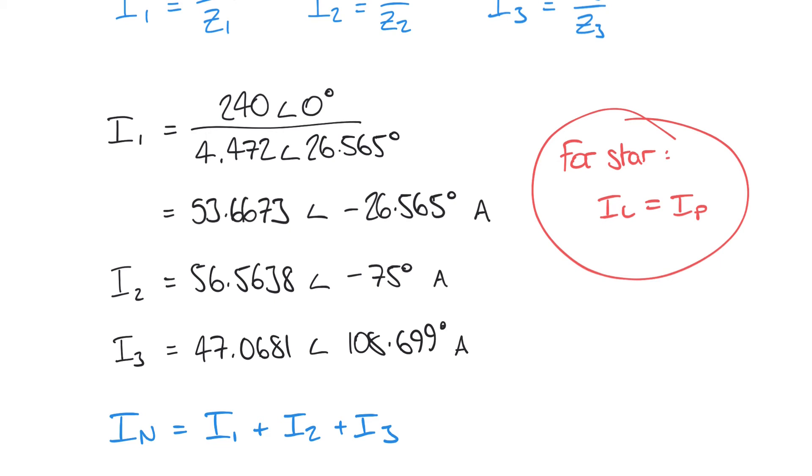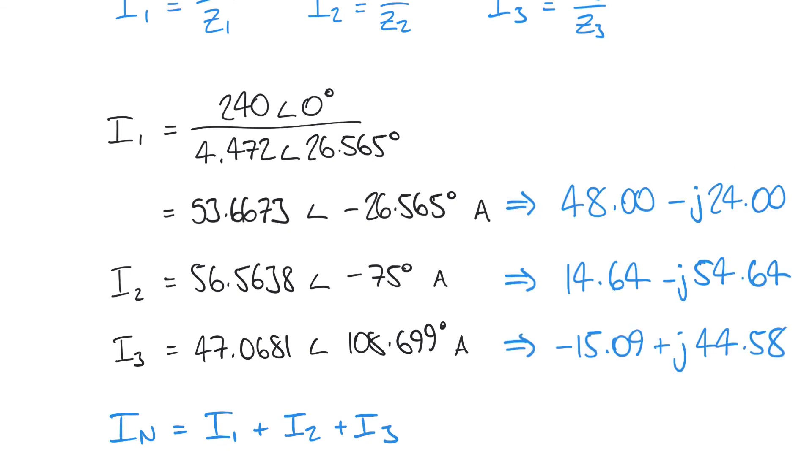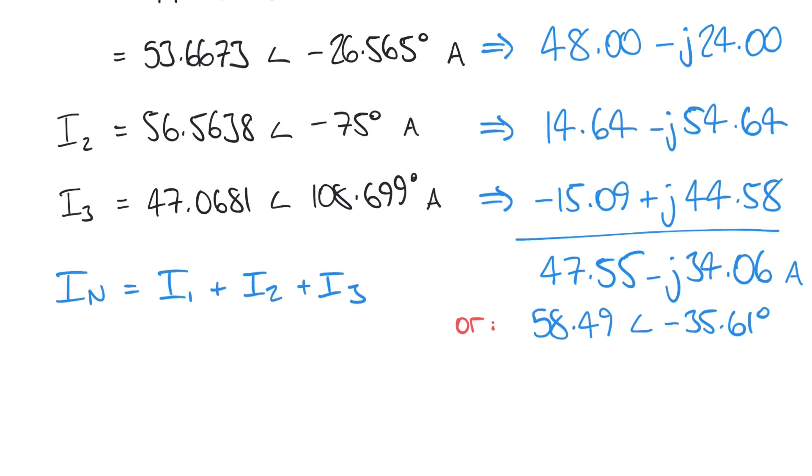What we'll do is convert these back just using the rec function on a scientific calculator to rectangular form. We have i1, i2 and i3 in rectangular form, and when we add those together we get a total neutral current that is not zero, as was the case in a balanced network. In this unbalanced network we're getting a non-zero neutral current of 47.55 minus j34.06. We can convert that back into polar form, which comes out as 58.49 at an angle of minus 35.61 degrees.